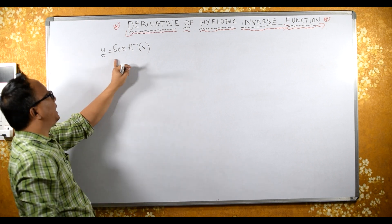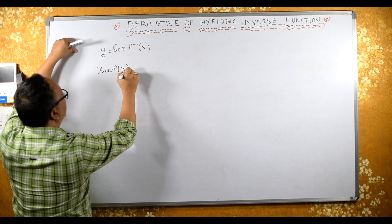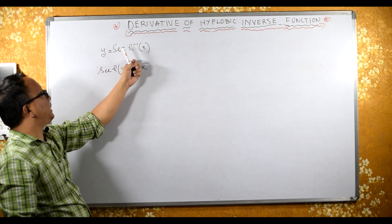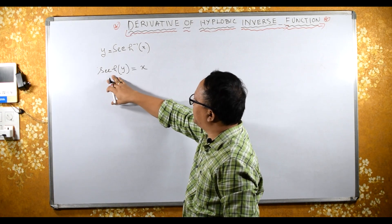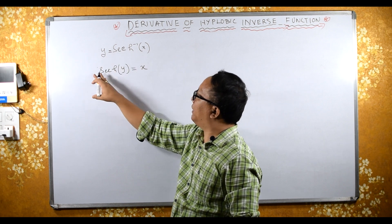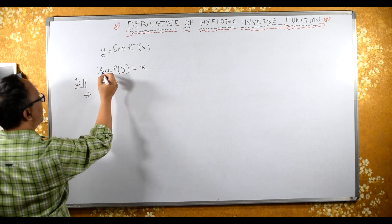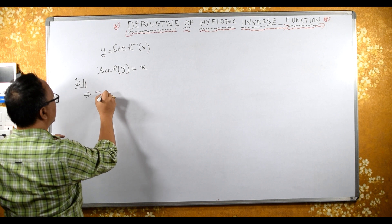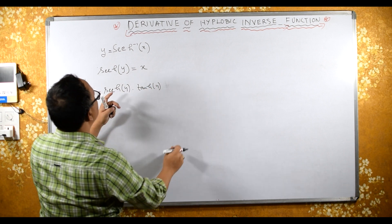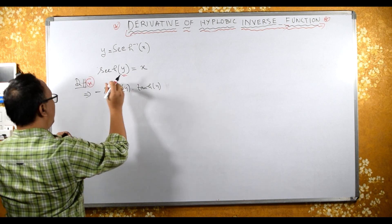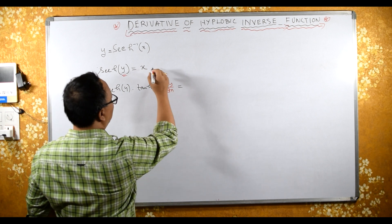For the second method: if y equals sech⁻¹(x), multiplying sech(·) on both sides gives sech(y) equals x. Now differentiating both sides with respect to x: the derivative of sech(y) is minus sech(y) times tanh(y), and since y is a function of x we multiply by dy/dx. The derivative of x is 1.